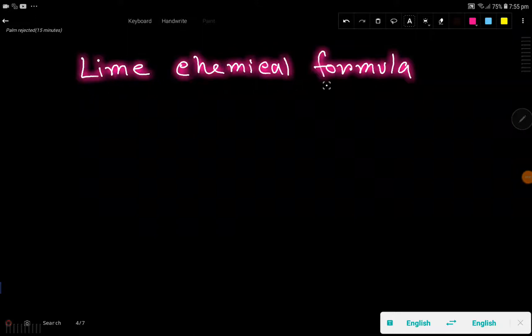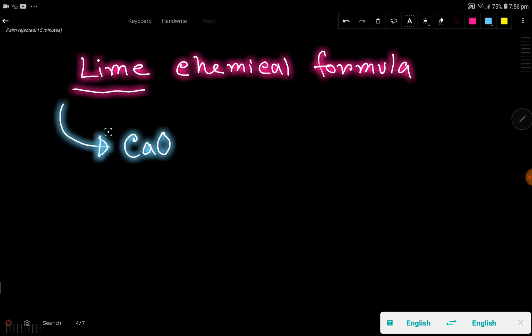Lime chemical formula, or what is the chemical formula of lime? Lime is a common name of calcium oxide. The chemical formula of lime is CaO, which is calcium oxide.